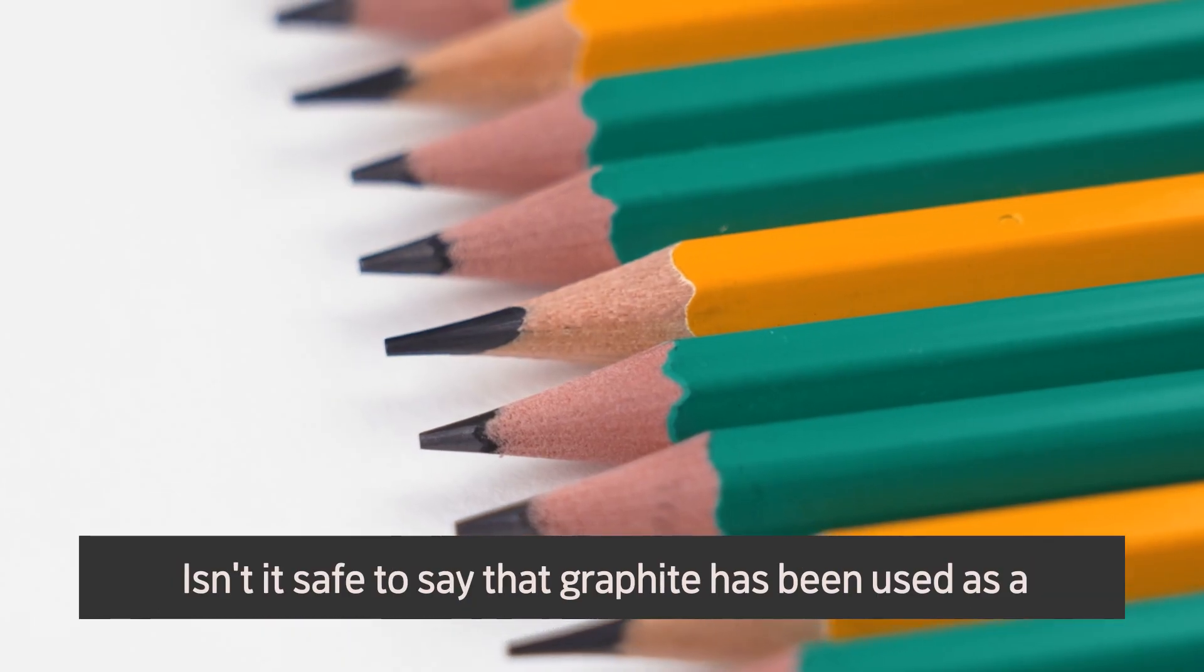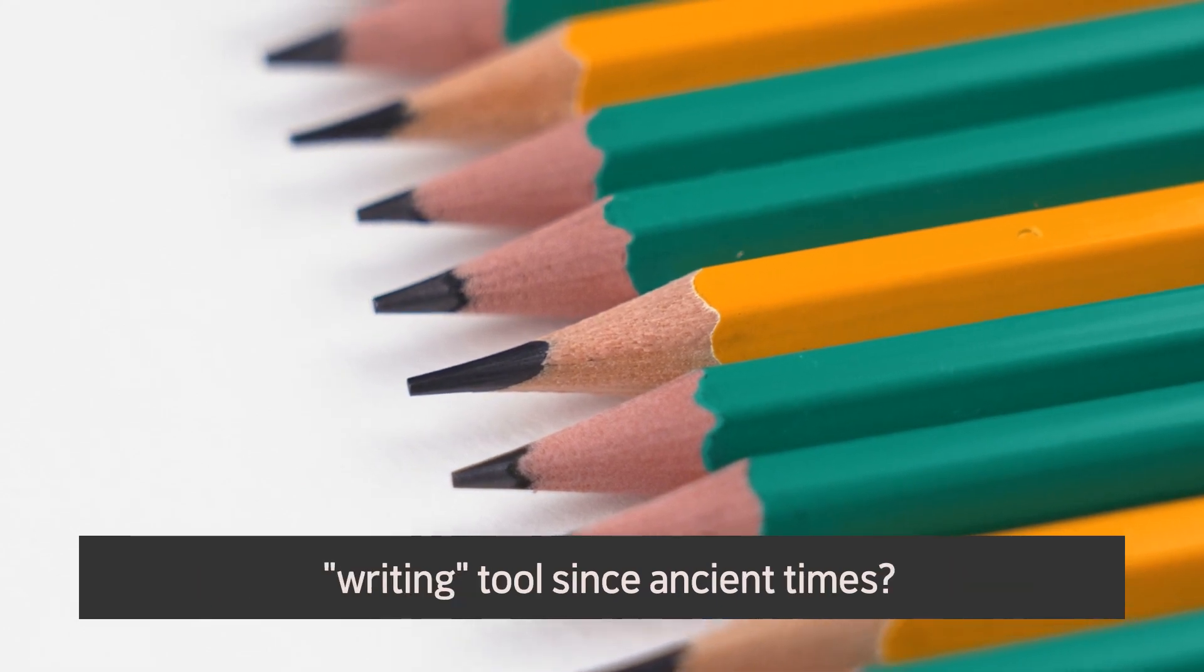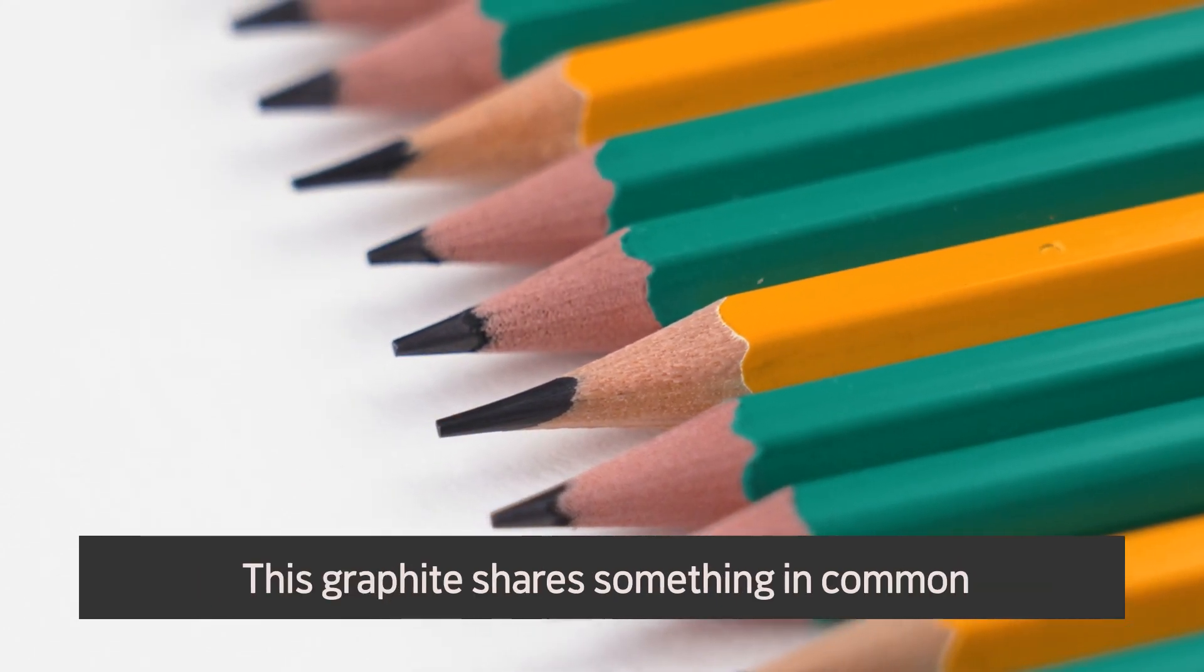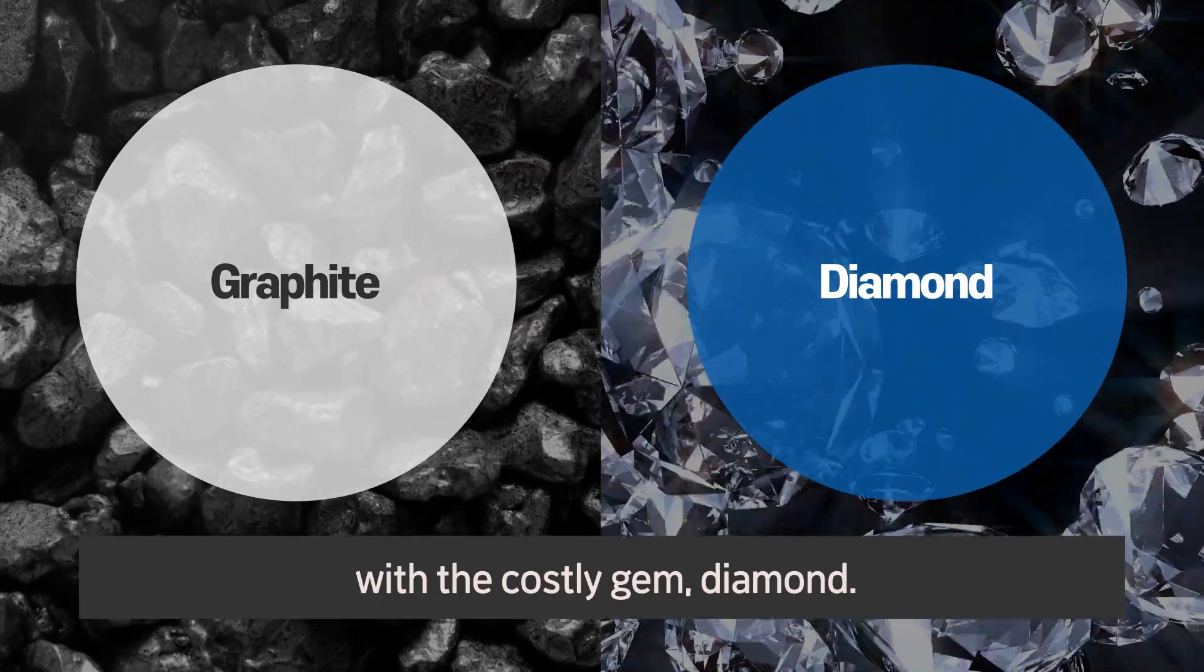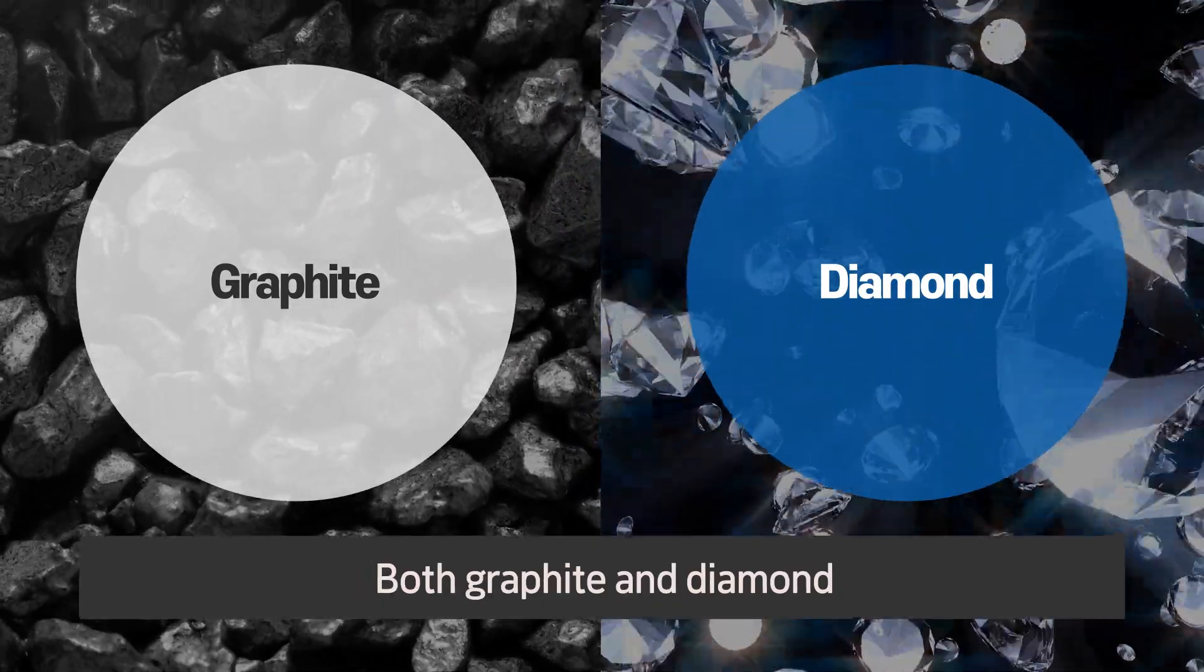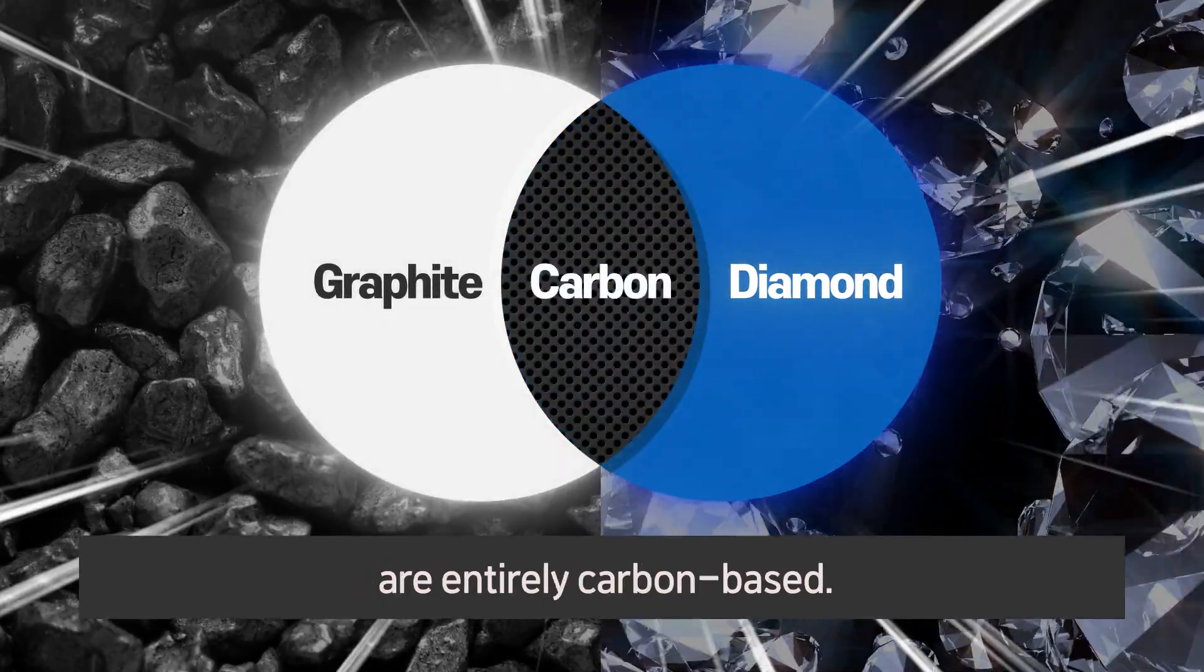Isn't it safe to say that graphite has been used as a writing tool since ancient times? This graphite shares something in common with the costly gem diamond. Both graphite and diamond are entirely carbon-based.